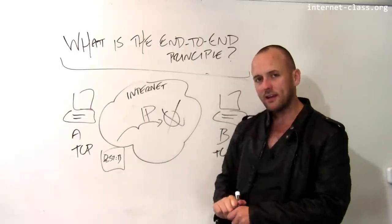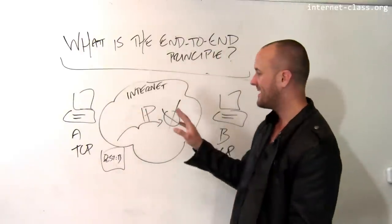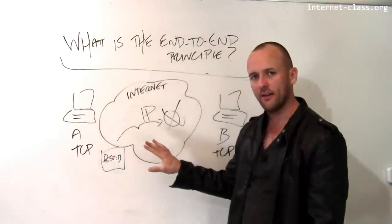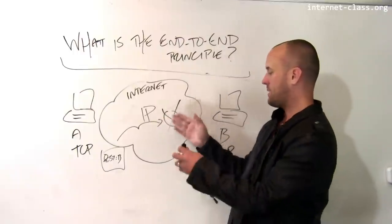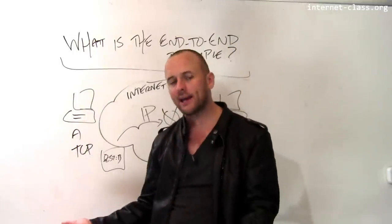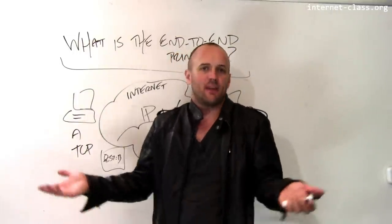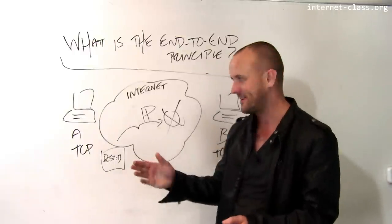The nice thing about the end-to-end principle is that there's two really nice things about it. One is that it keeps the core internet very simple. So for example, whatever part of the internet dropped this packet doesn't have to worry about it. It's okay to drop packets sometimes on the internet. That's what happens in life—sometimes things don't go according to plan.